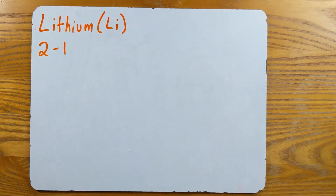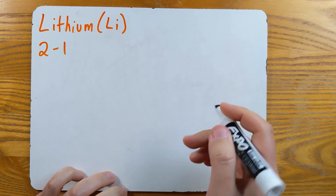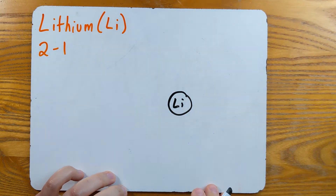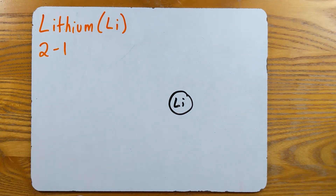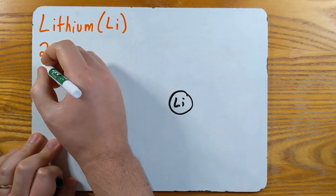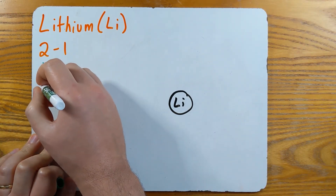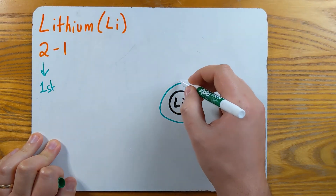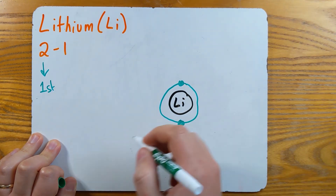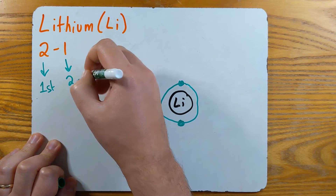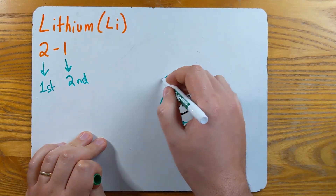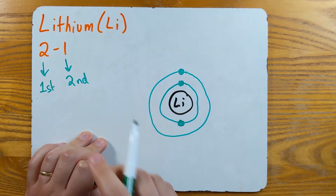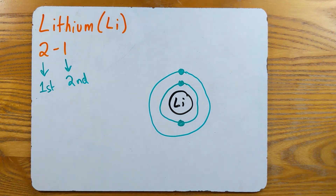Now I'm going to draw a circle that represents the nucleus, and just write Li inside. Now I'm going to start drawing my energy levels. The first energy level has two electrons, so I'll draw my first ring with two dots. My second energy level has one electron — that's what I like to call the penthouse, the electron sitting at the outer ring.